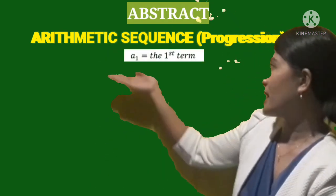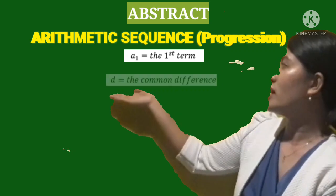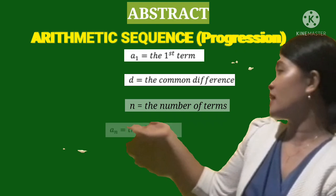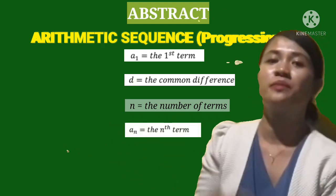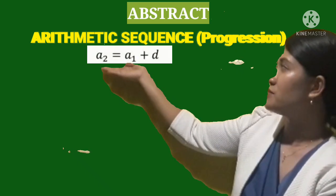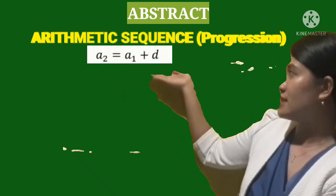So in general, if we let A sub 1 be the first number, d be the common difference, n be the number of terms, and A sub n be the nth term. So by the definition, we can say that the second term, A sub 2, is equal to A sub 1 plus d.